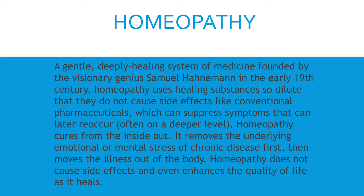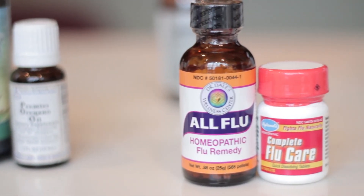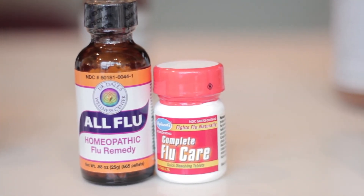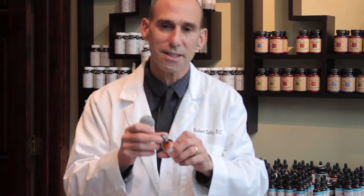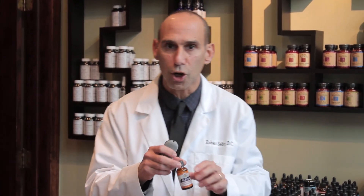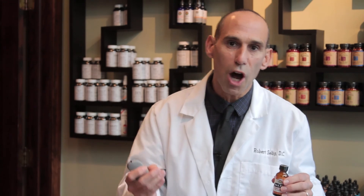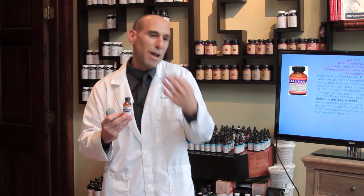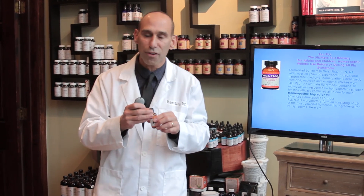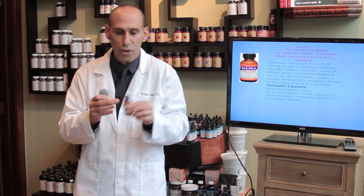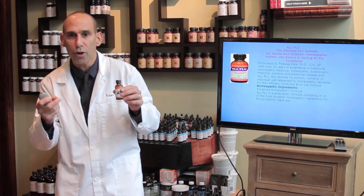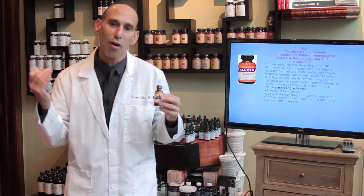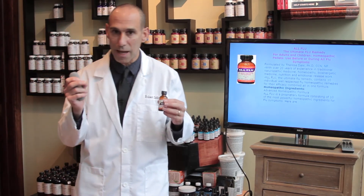One of the first formulas I love is All Flu. All Flu is made up of 10 all-stars — each homeopathic remedy has a different symptom profile picture. This is a combination of 10 of the most common flu remedies. I'll usually take it pre-flu season, maybe a dose during the flu season, and this will help prevent the flu from happening in the first place. But as soon as I feel that first sign of a flu, I'll reach for All Flu until I get a profile of what the actual indicated remedy may be.